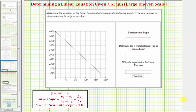Here we're given the graph of a linear function, and we're asked to determine the slope, the vertical intercept, and the equation for the linear function in slope-intercept form, or the form y equals mx plus b.